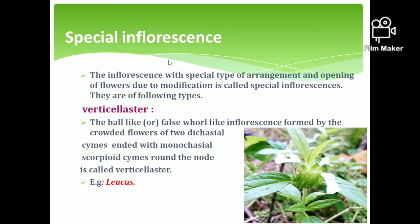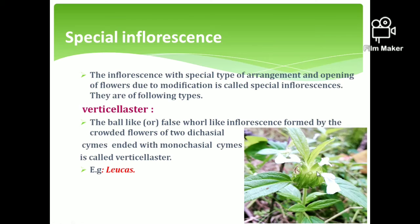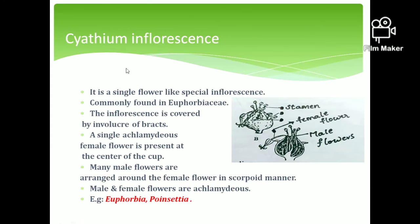The next category is special inflorescence — a type that is neither purely racemose nor cymose. The first one is verticillaster inflorescence. In verticillaster, the flowers are arranged in a whorl-like pattern. It has two dichasial cymes arising at a node, giving a whorled appearance. This arrangement is seen in plants of the Lamiaceae family, such as Leucas.